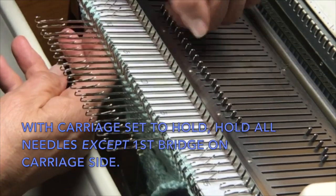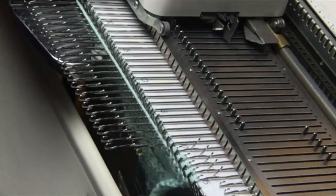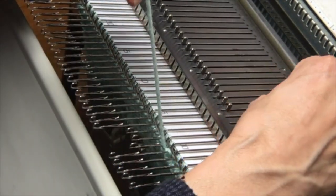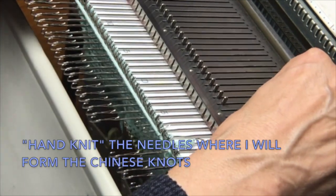My carriage is set to hold needles in holding position and I'm going to knit one row across the bridge, hold those needles, and then while I'm here I'm going to hand knit the next four needles all the way back against the rail.